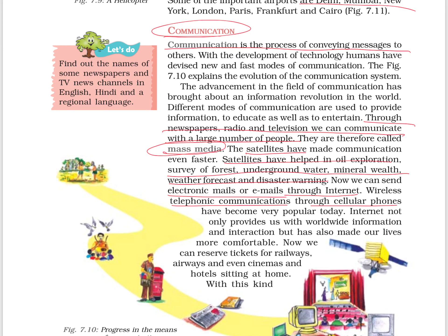By this we have completed Chapter 7. I am explaining each and every point because now it may seem unimportant, but when you write descriptive answers you will search for words and sentences. Just go through the NCRT books word by word at least once — they are very simple in language, easy to understand, and very useful for writing answers. Thank you.